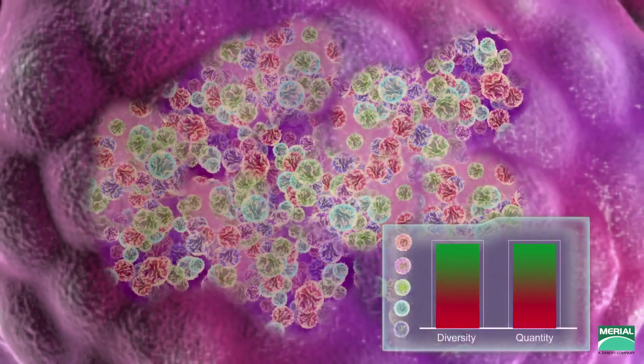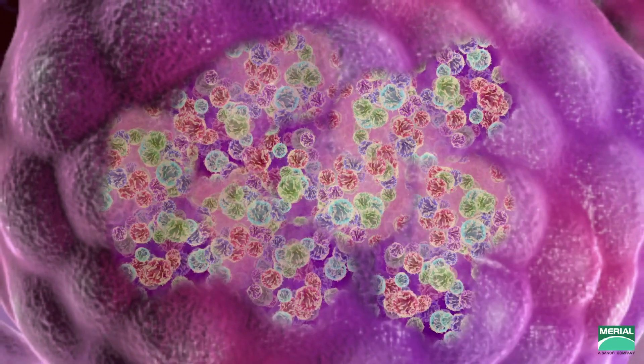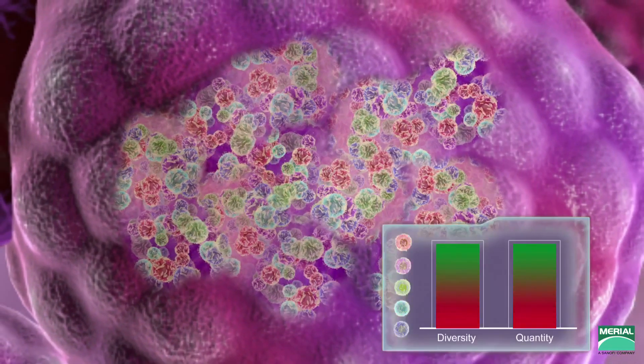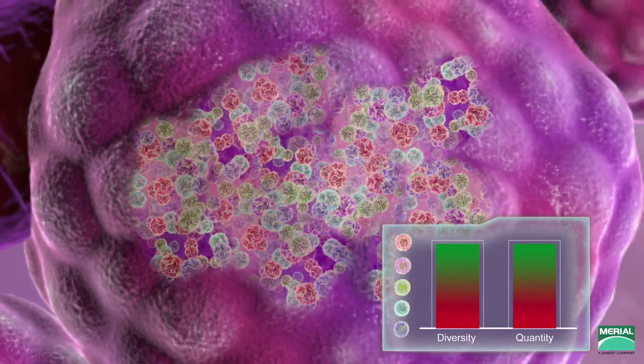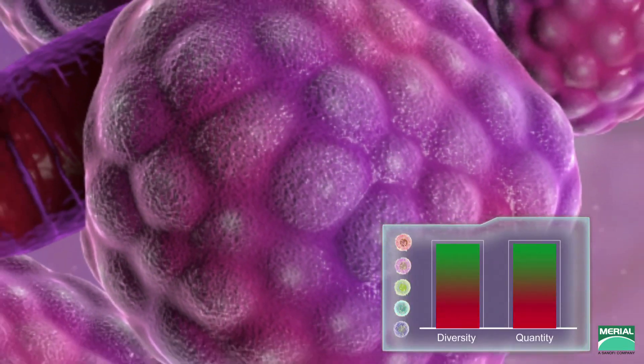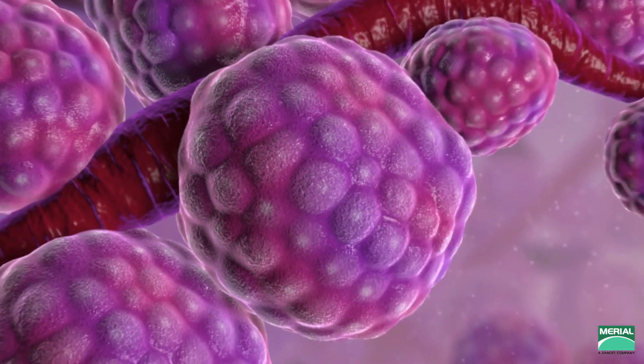The bursa remains intact, maximizing the diversity and quantity of B cells throughout the body. The bird's immune system offers an optimal response to external antigens.